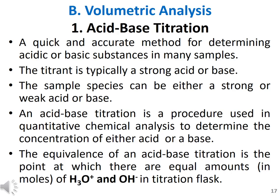In acid-base titration, we normally use acid-base indicators, which are usually weak organic compounds that express their color over the working pH range of the indicator. If you are titrating strong acid versus strong base, the indicator will be different from that used for weak acid versus strong base. Different acid-base titrations require different acid-base indicators, and the selection of indicator depends upon the equivalence point of the acid and base reacting in the chemical reaction.